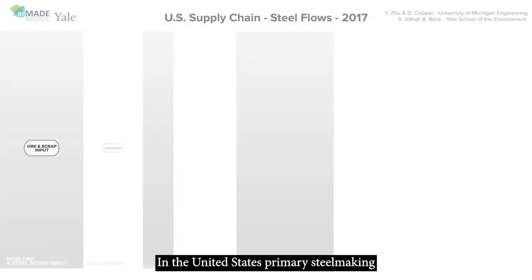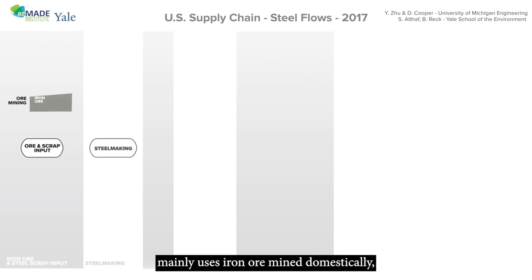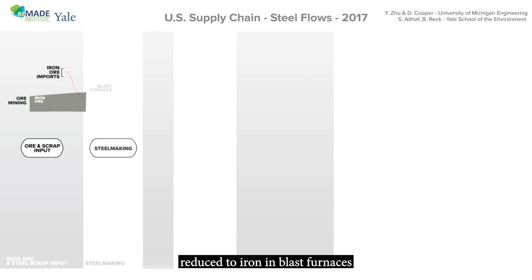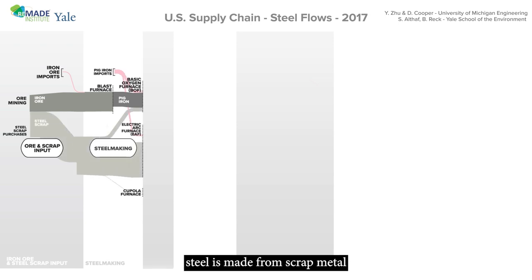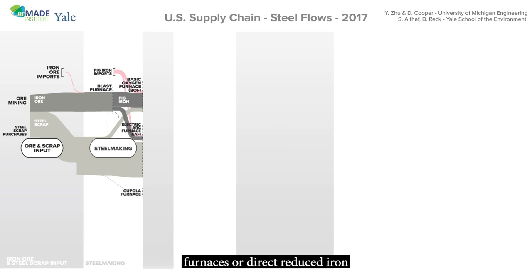In the United States, primary steelmaking mainly uses iron ore mined domestically, which is first reduced to iron in blast furnaces and then converted to steel in basic oxygen furnaces. Alternatively, in secondary steelmaking, steel is made from scrap metal by combining it with primary pig iron from the blast furnaces or direct reduced iron in electric arc furnaces.